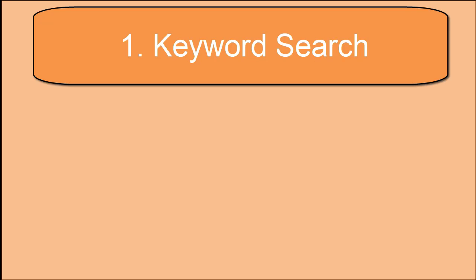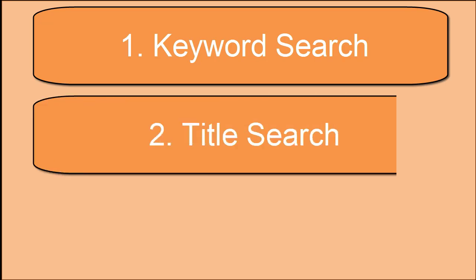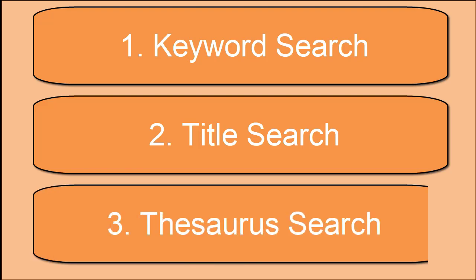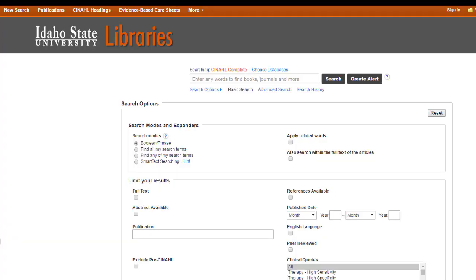We can start with a basic keyword search, copy and paste the title of an article you already have, or search the subject heading thesaurus — which is basically a collection of all the subject headings in one database. We'll start with the first option: running a basic keyword search in order to track down some subject headings.